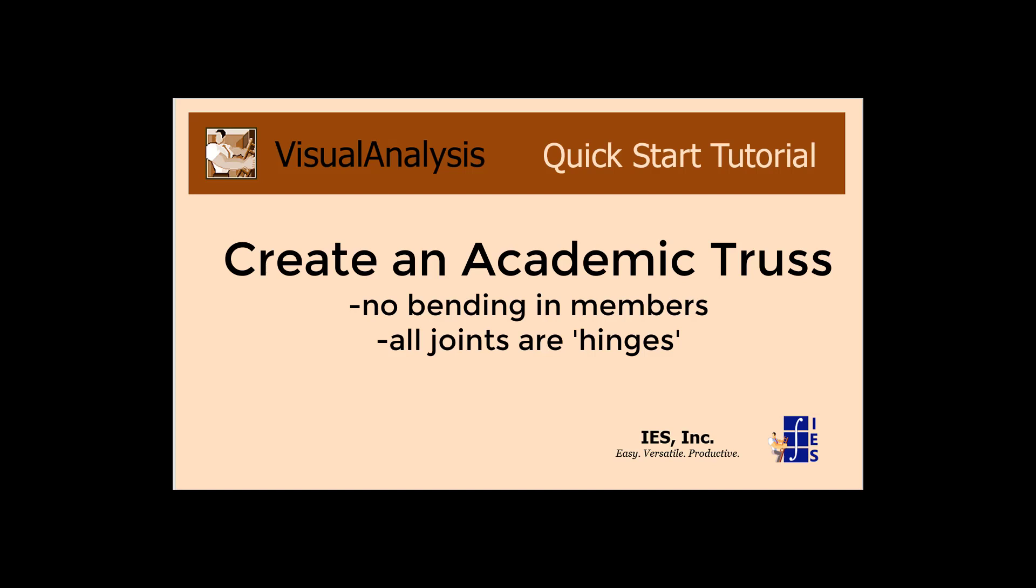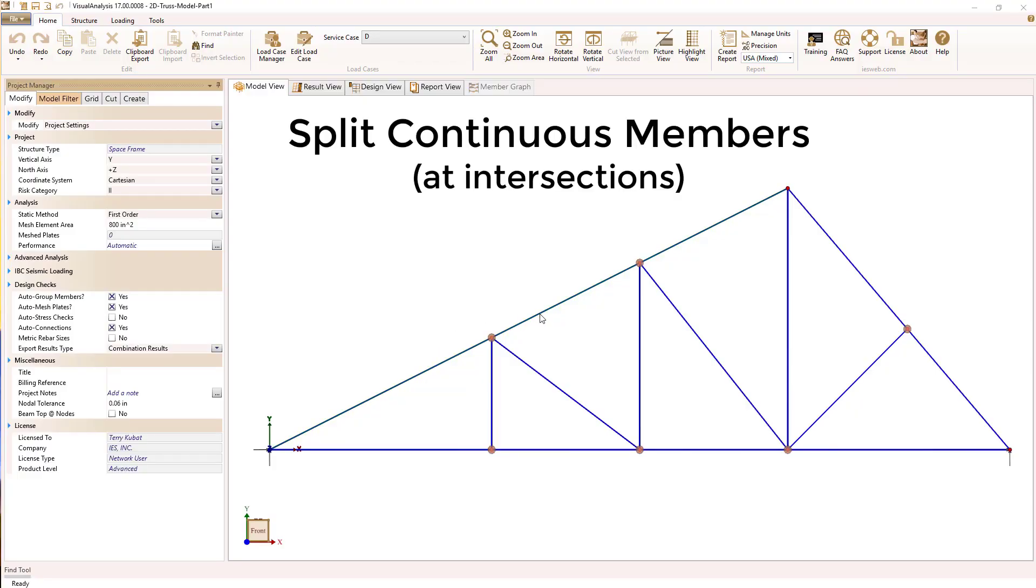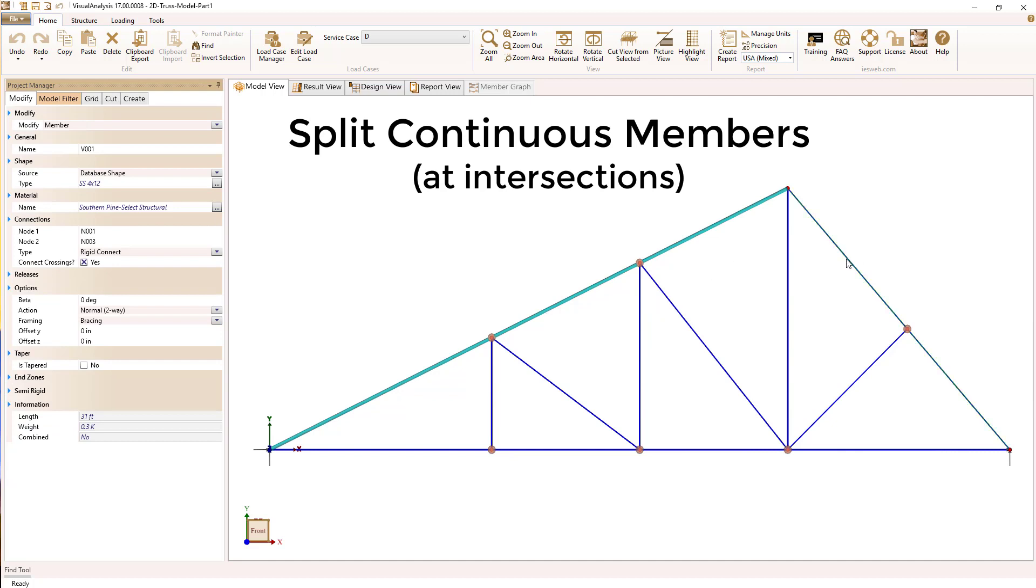Hello, in this video I would like to demonstrate how you can create an academic or pure truss where there's no bending in the members and all the joints are hinges. This video is an aside on a previous tutorial where we did a simple truss.